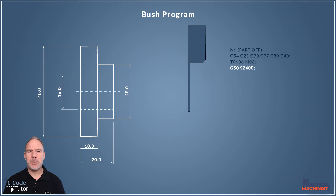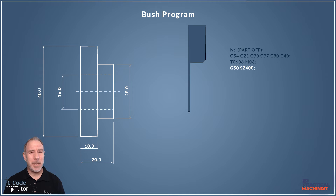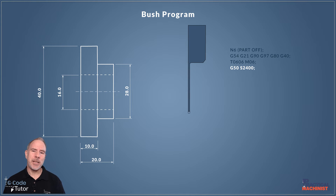We're going to be using G96 constant surface cutting speed for this sequence, so before we enter that we need to add a speed clamp. This stops the machine going above a certain RPM, because as we're parting off, the parting off tool is going down to X0, which would cause the spindle to go to an infinite speed. We don't want it going above 2400 RPM, so by issuing a G50 speed clamp the machine will not exceed 2400 RPM.